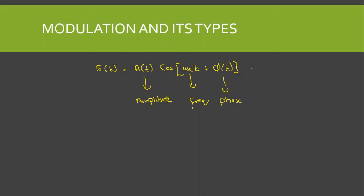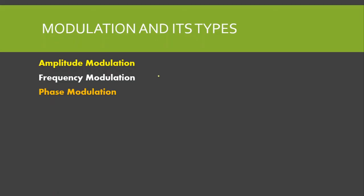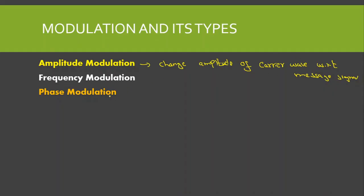Based on these three variables, we have three types of modulation: amplitude modulation, frequency modulation, and phase modulation. In amplitude modulation, we change the amplitude of the carrier wave with respect to the message signal. In frequency modulation, we change the frequency of the carrier wave with respect to the message signal. In phase modulation, we change the phase of the carrier wave with respect to the message signal.